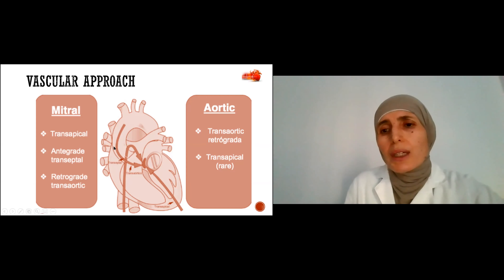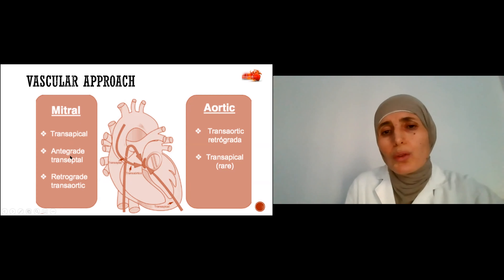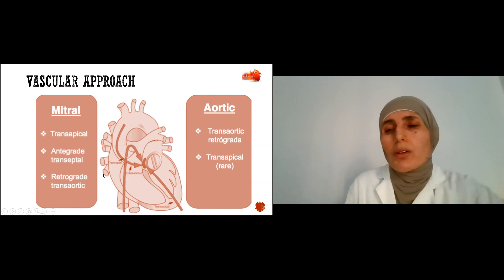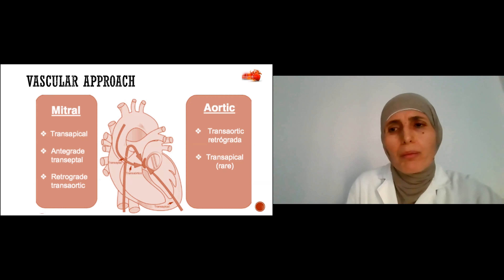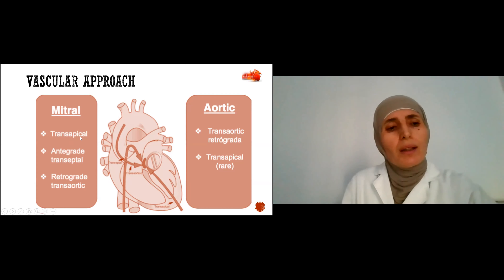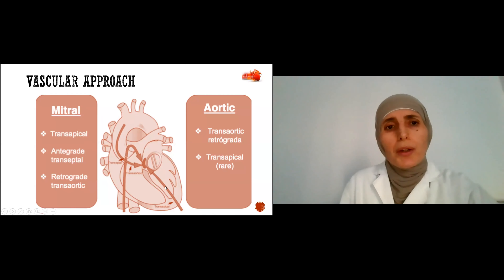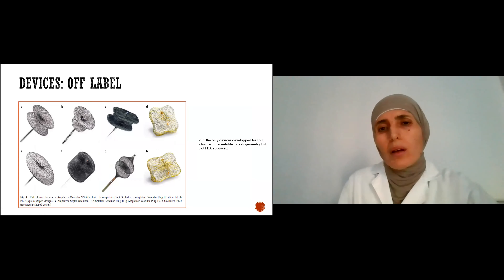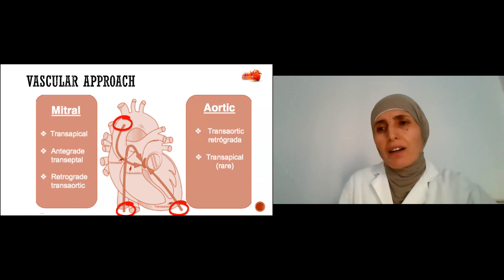For the aortic valve, we can use a retrograde or an anterograde approach. For the mitral valve, we usually use an anterograde transseptal approach, but alternatives are a retrograde or aortic approach when there is no prosthesis on the aortic valve — though many of our patients have had double valve replacement. Another alternative, particularly for septal defects, is a trans-apical approach. All this is discussed after the imaging evaluation and assessment.